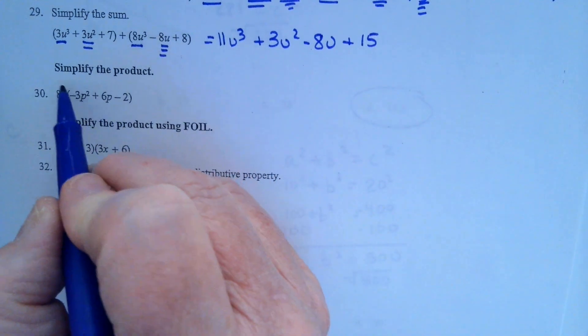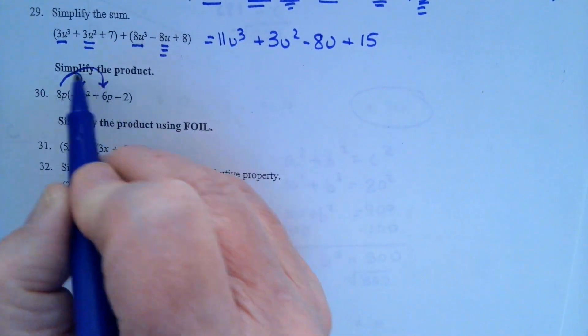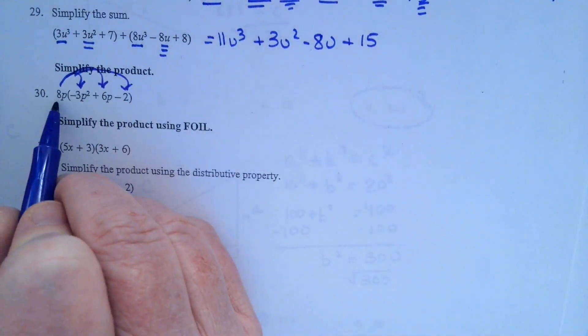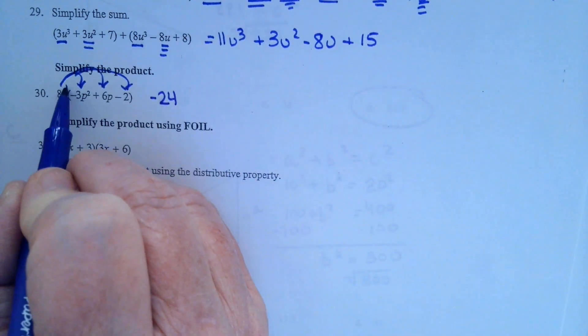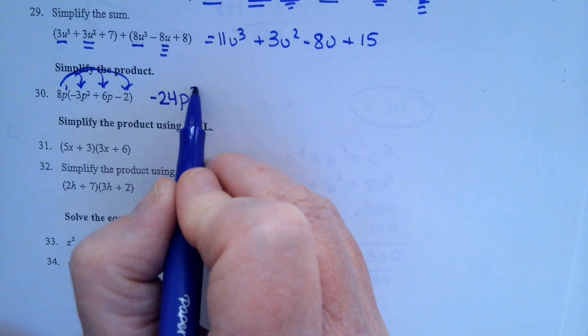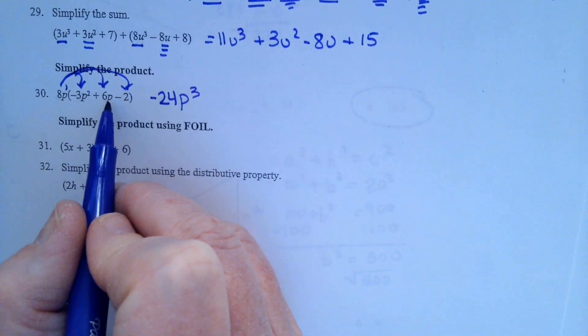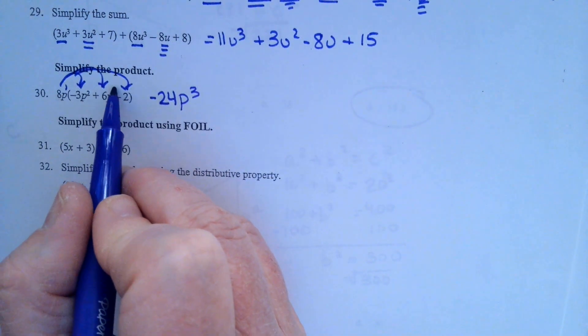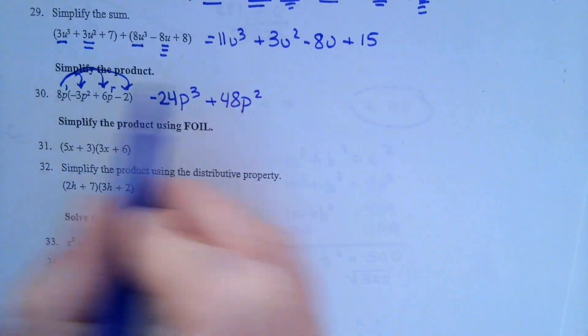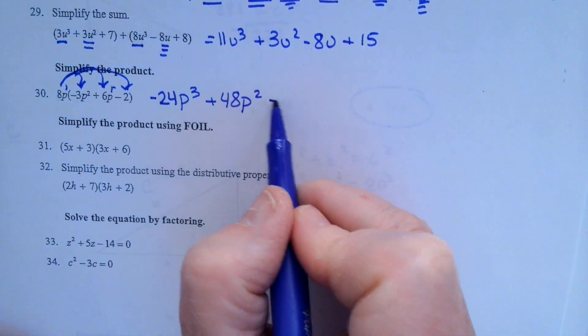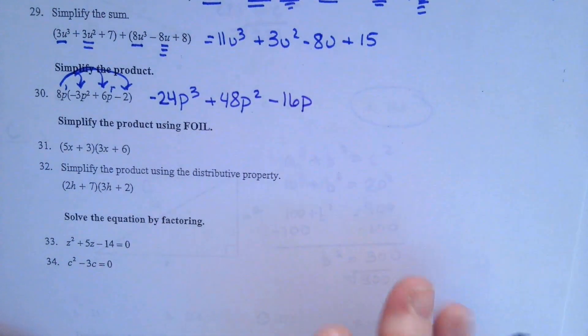Simplify the product. You're going to use the distributive property here. And we're going to multiply as we move across. 8 times negative 3 is negative 24. p to the 1st times p squared is p to the 3rd. 8p to the 1st times 6p to the 1st is 48p squared. 8p to the 1st times negative 2 is negative 16p.